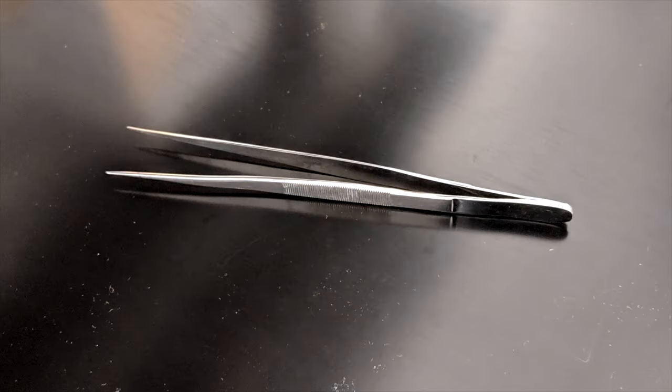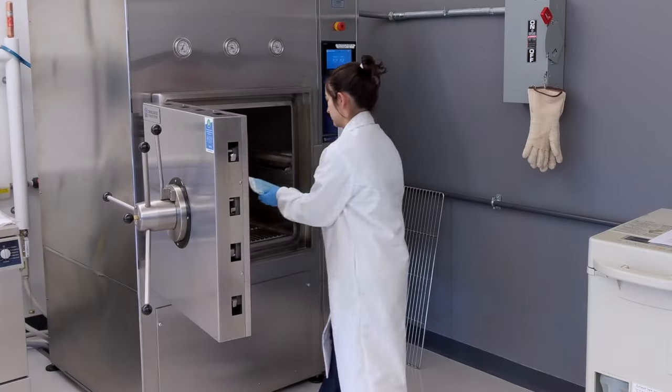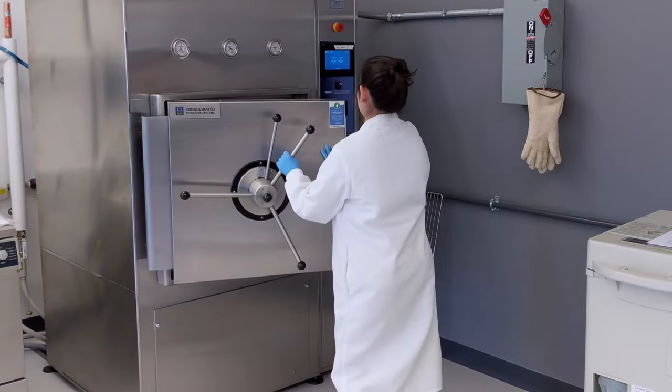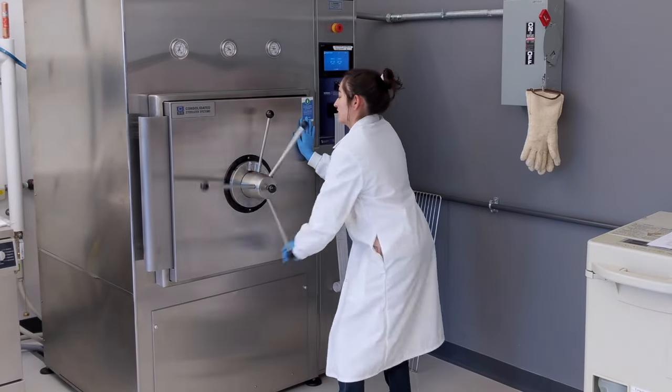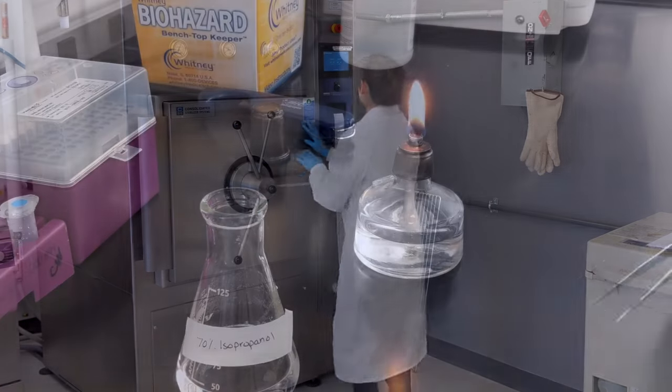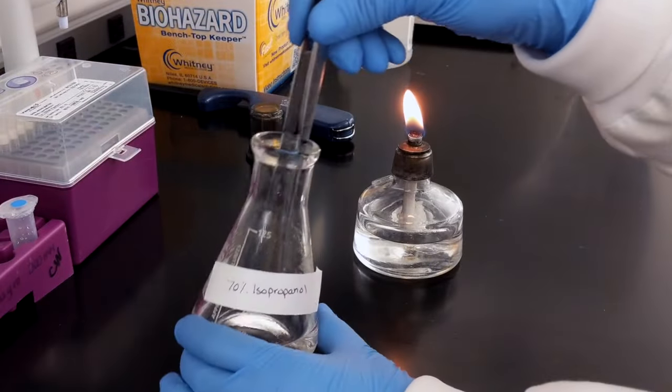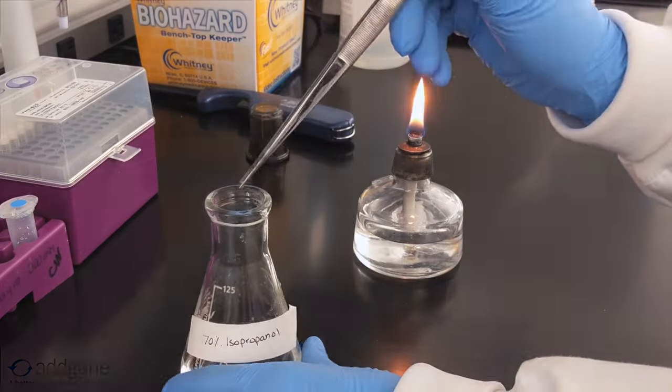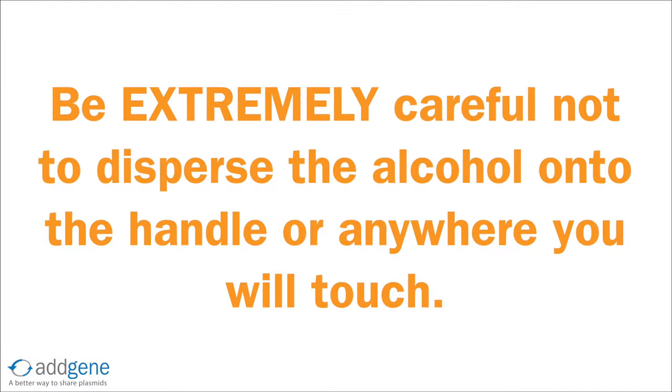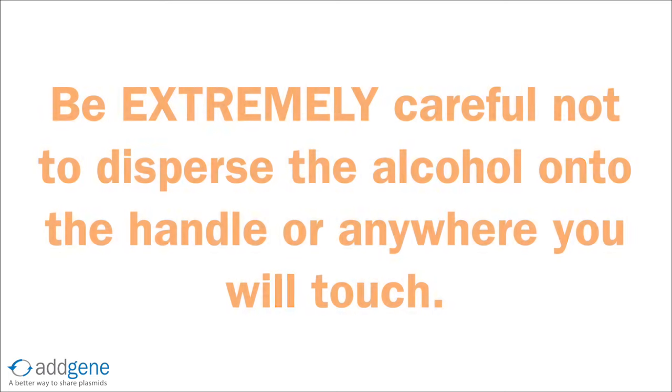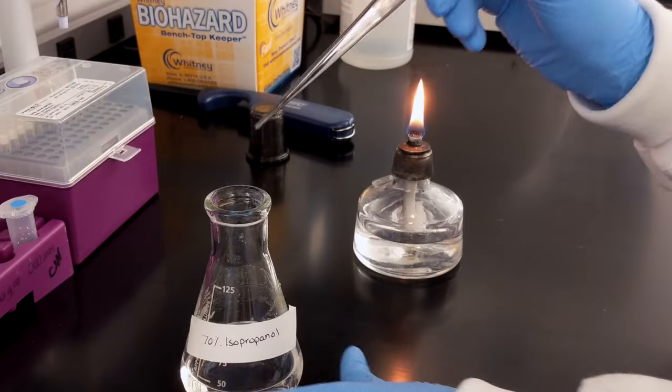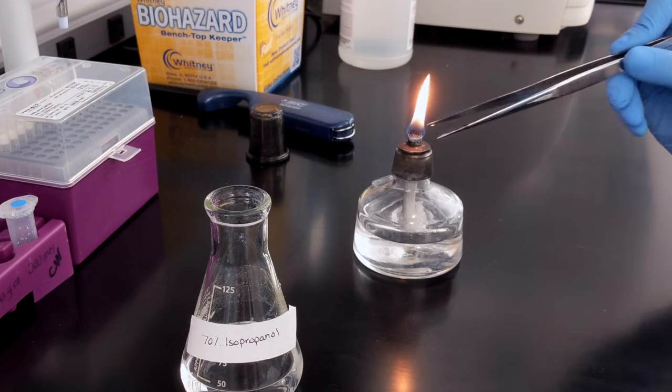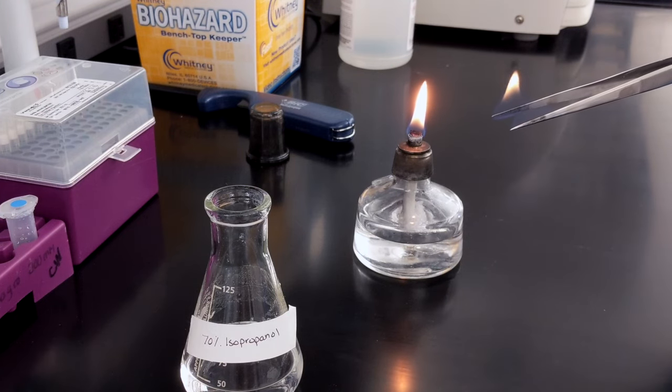Metal objects such as forceps and spreaders are used and reused frequently in the lab. While these items can be sterilized in an autoclave, it is often more convenient to disinfect with alcohol in a burner. To sterilize, dip the portion of the instrument that will be used for the procedure in 70% alcohol. Be extremely careful not to disperse the alcohol onto the handle or anywhere near the area that you will touch. Pass the alcohol-dipped portion of the instrument through the flame of the burner to ignite and then allow the alcohol to burn off.